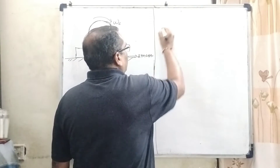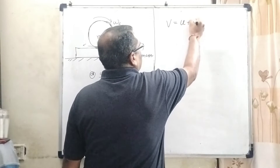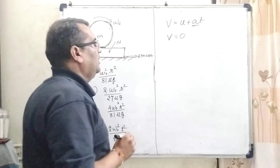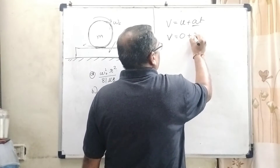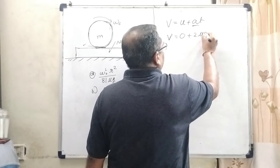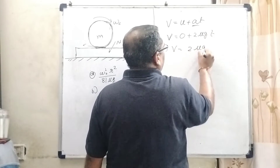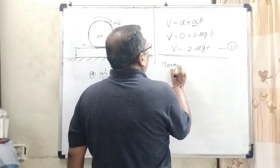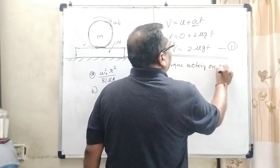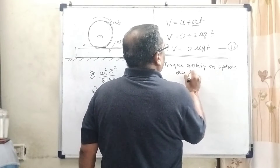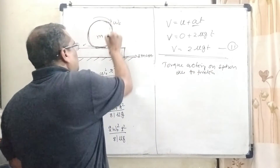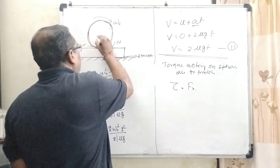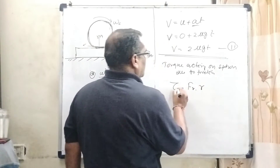From the first equation of kinematics: V equals u plus At. Here the initial relative velocity is 0, and the relative acceleration is 2 mu g, so V equals 2 mu g times t. Now, torque acting on the sphere due to friction: when the sphere rotates, friction is applied, so tau equals friction force times perpendicular distance r.